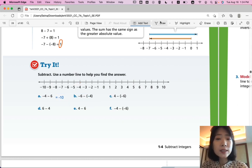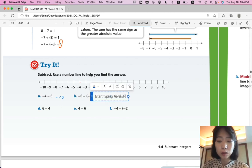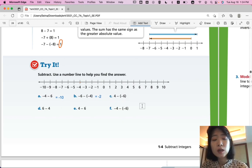Part B. From negative 6, you are subtracting negative 4. If you're adding negative 4, you go left. But, if you're subtracting negative 4, you have to add 4. You go right. 1, 2, 3, 4. So, you're going to end up with negative 2.